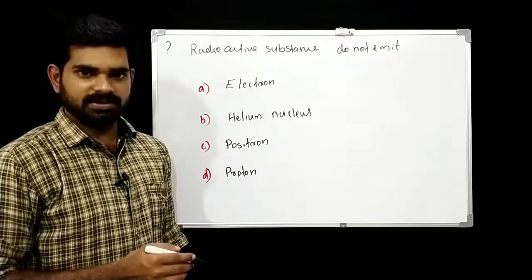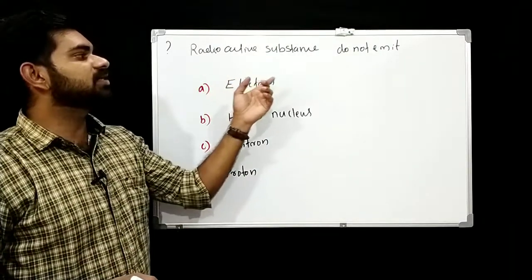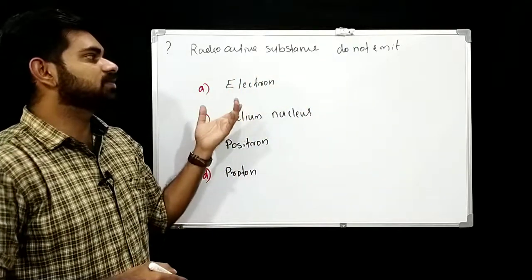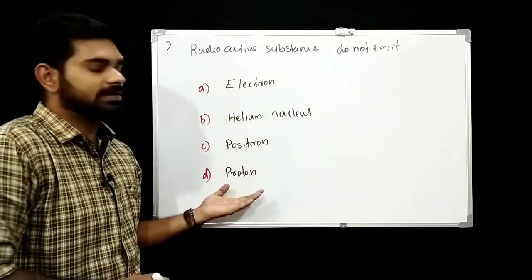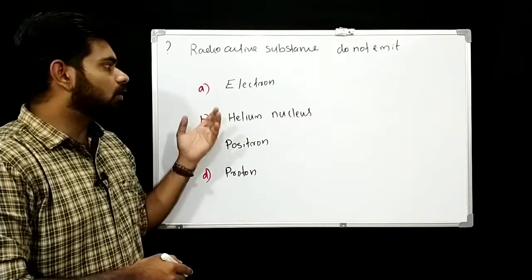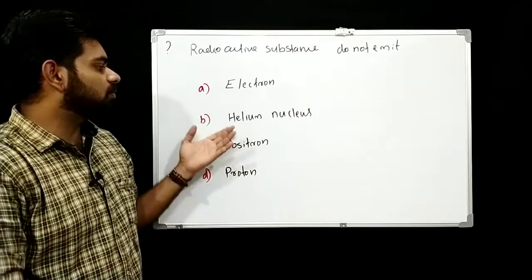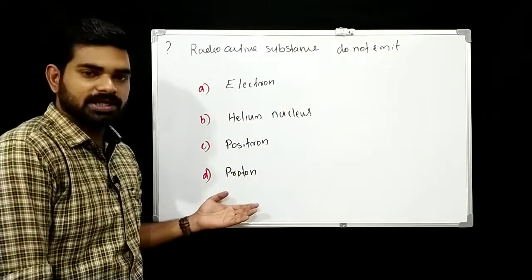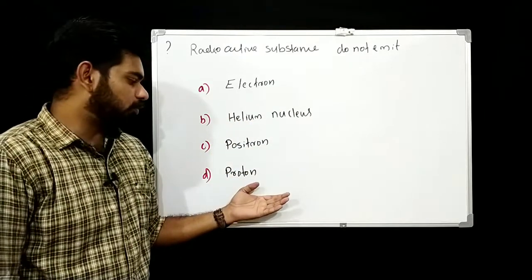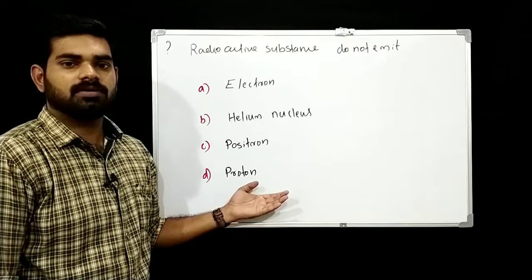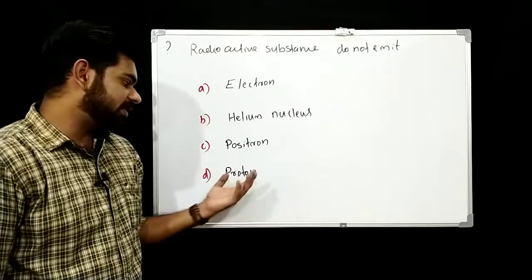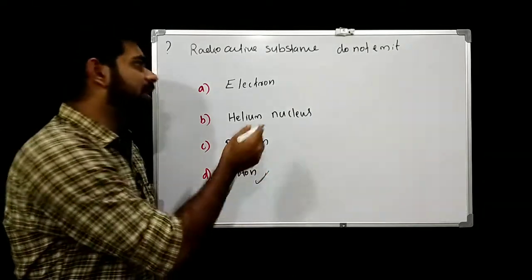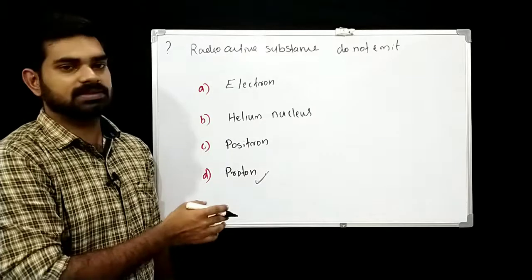The next question: radioactive substances do not emit — option A: electron, option B: helium nucleus, option C: positron, option D: proton. The answer is option D: proton. Radioactive substances emit alpha particles (helium nuclei), beta particles (electrons or positrons), and gamma rays, but not protons directly.